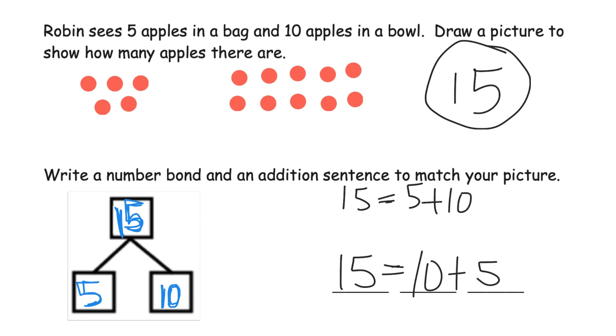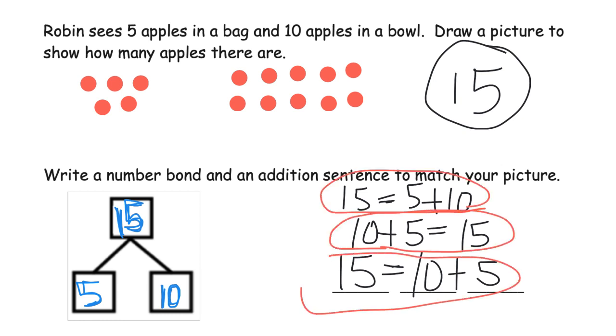We could write 10 plus 5 equals 15. So we have a ton of choices. This is a choice. This is a choice. And this is a choice. So we have other choices as well. But that's the idea, parents and teachers. We want our kiddos to be able to look at that 15 and represent it inside a number bond as the whole. And then the 5 and the 10 are our parts.